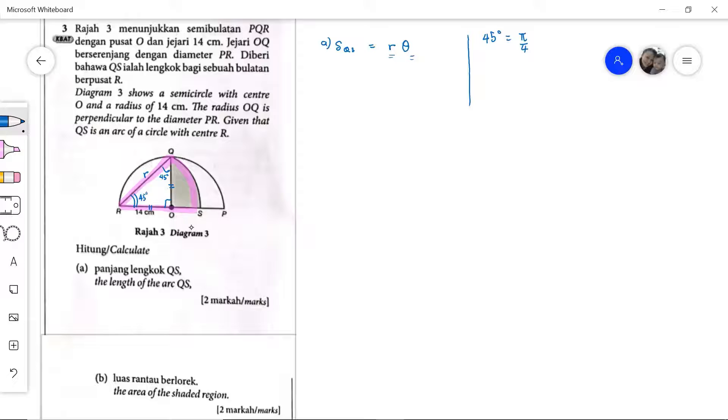On top of that, we need to find the R. R is the hypotenuse of the right angle triangle OQR. So to find R, that is the square root of 14 squared plus 14 squared. So we have twice of 14 squared. When we square root this one, we will have 14 root 2.